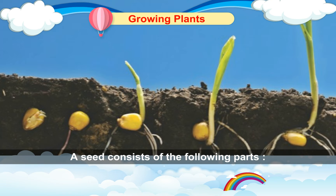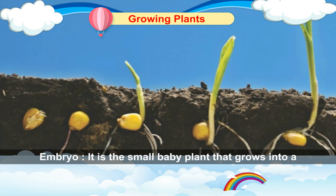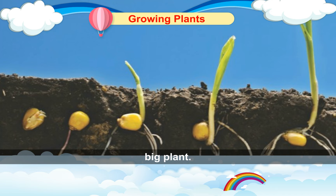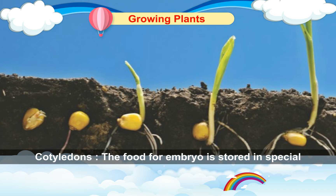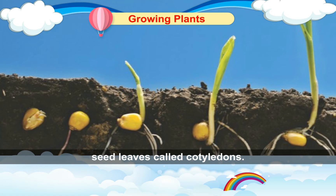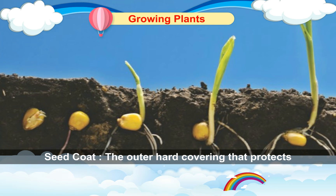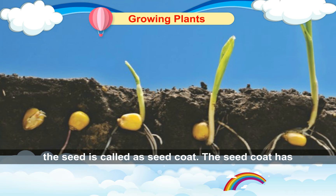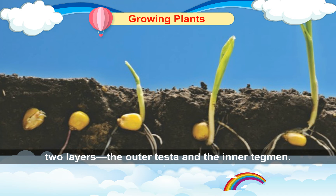A seed consists of the following parts. Embryo: it is the small baby plant that grows into a big plant. Cotyledons: the food of the embryo is stored in special seed leaves called cotyledons. Seed coat: the outer hard covering that protects the seed is called the seed coat. The seed coat has two layers — the outer testa and the inner tegmen.